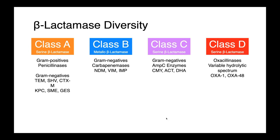Class A includes many of our narrow-spectrum gram-positive enzymes, our penicillinases, and our TEM-, SHV-, and CTXM-type enzymes in gram-negatives. We also see the KPC, SME, and GES-type carbapenemases falling within class A. Within class B, we have a number of very important carbapenemases: NDM, VIM, and IMP. Class C encompasses our AMP-C-type enzymes — most importantly, CMY.